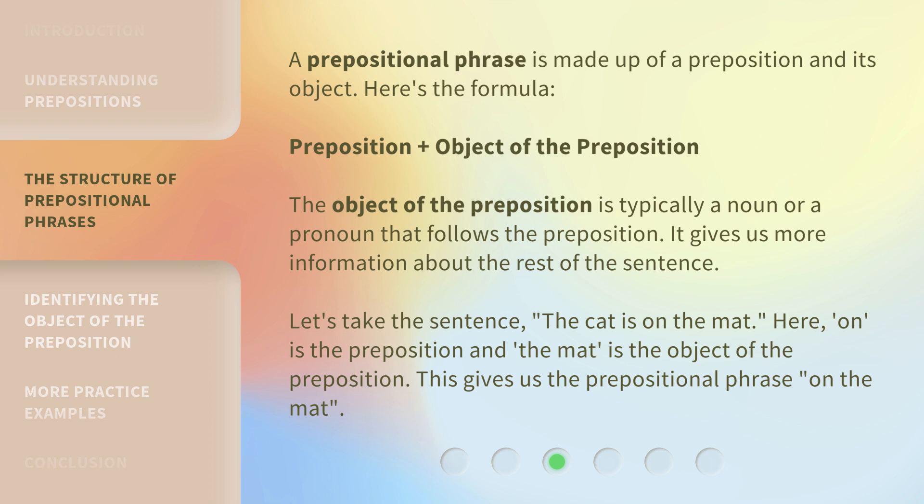Let's take the sentence: the cat is on the mat. Here, "on" is the preposition and "the mat" is the object of the preposition. This gives us the prepositional phrase "on the mat."